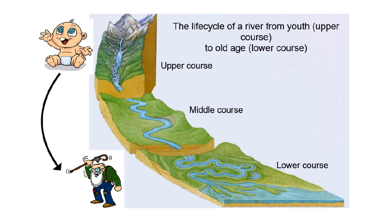If we look at the life cycle of the river, from the start at its source all the way down to the lower course where it would end — at the mouth where it flows into the ocean or into an inland drainage basin — we can liken these different stages: the upper course, the middle course, and the lower course, to youth all the way through to old age, hence the pictures.